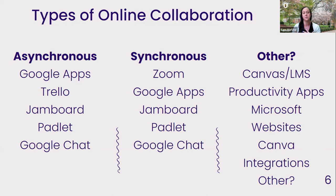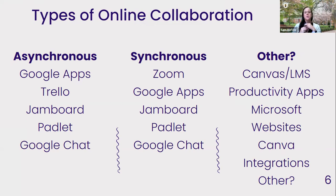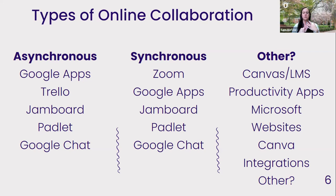Today we're really focusing on asynchronous collaboration that also has some synchronous components. Google Chat can be synchronous or asynchronous. Some synchronous tools we use include Jamboard, Padlet, and Google Chat — all the Google apps can be used synchronously. The only one we're talking about today that isn't typically used synchronously is Trello. All of these tools can work within a virtual online space like Zoom, whether you're teaching synchronously or asynchronously, or doing a conference where you want interaction with your audience.